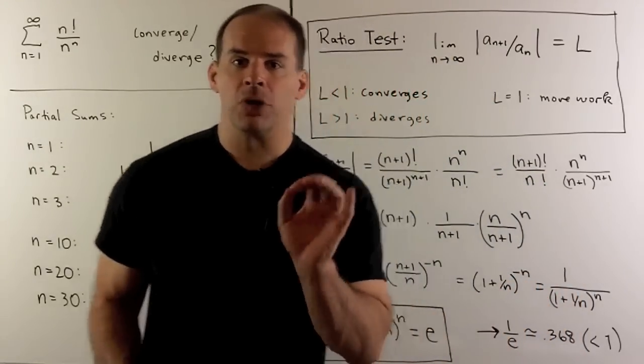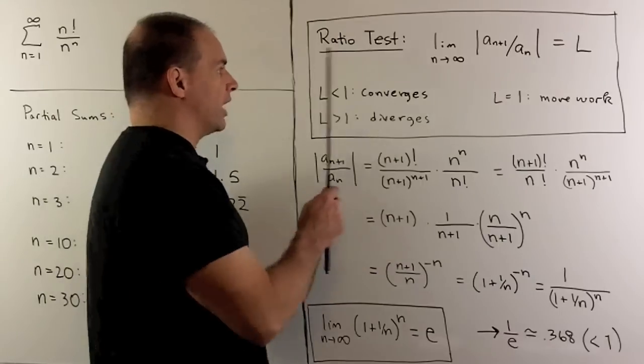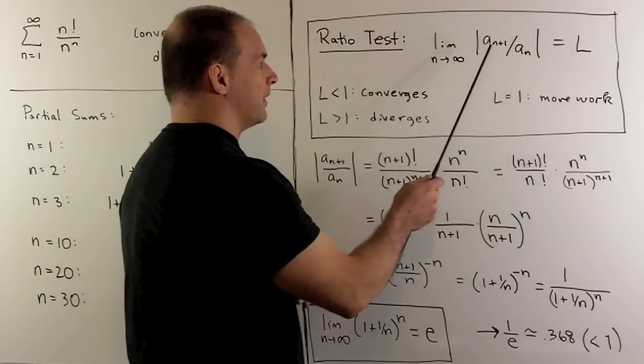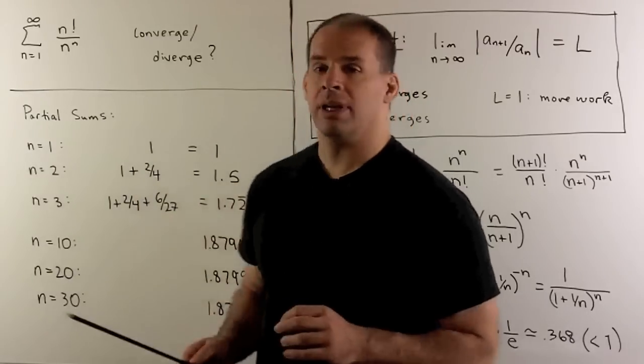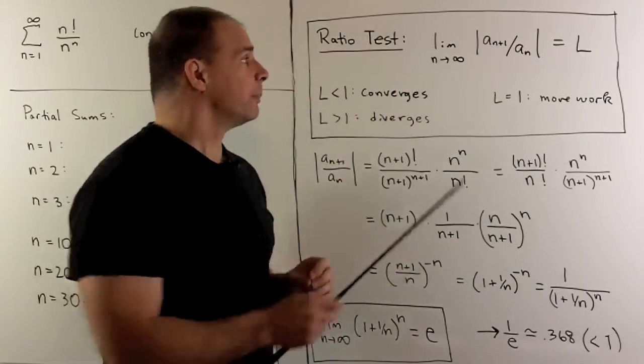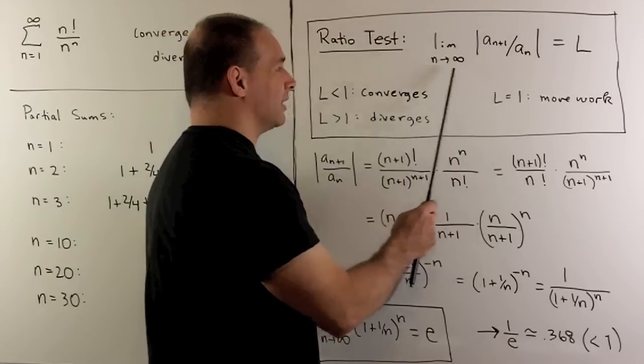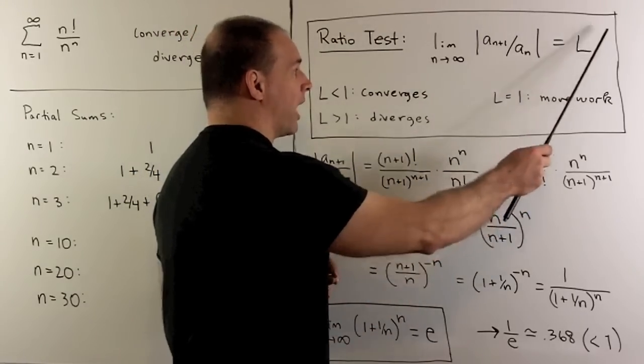Now, for our first approach, we have the ratio test. So what we'll do is, we'll take the n plus first term of the sequence that goes with our series, divide by the nth term, take the absolute value, take the limit, it's going to go to some number L.